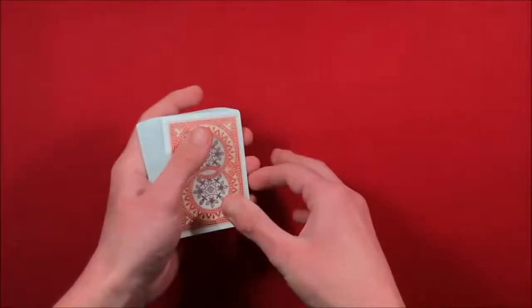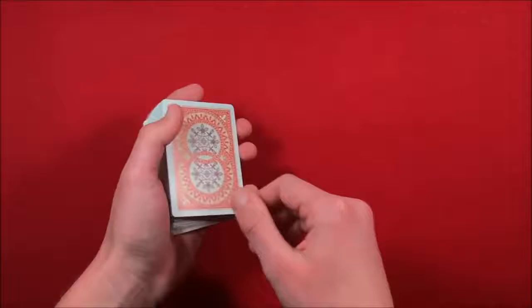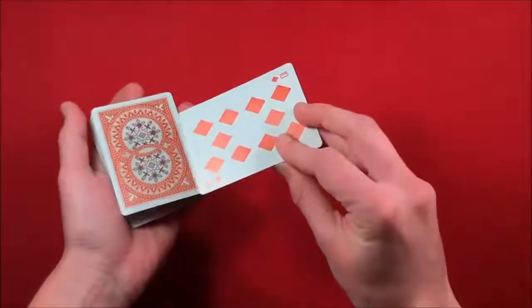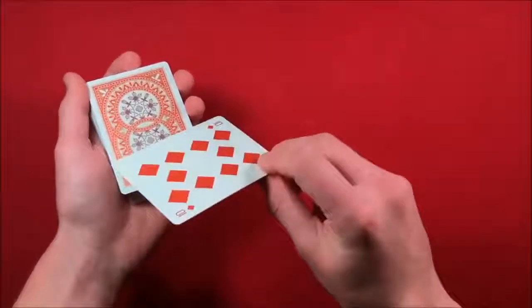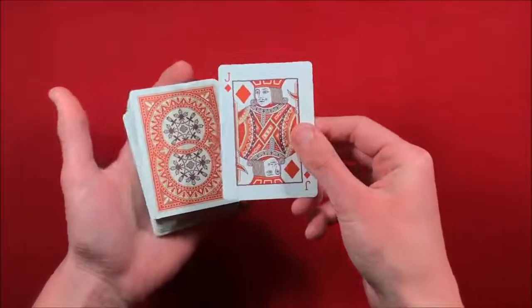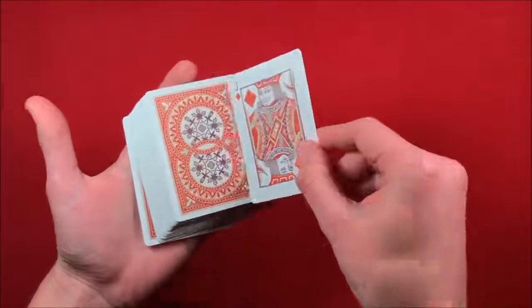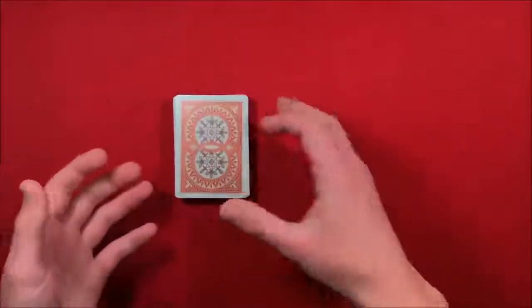Once you do the double lift, you take their card—in this case the jack of diamonds. When you do your double lift, you're putting that indifferent card into the middle, and their card is still on top. So their selected card is still on top of the deck.